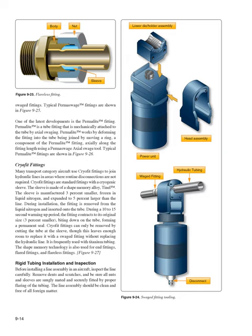Cryofit fittings: many transport category aircraft use cryofit fittings to join hydraulic lines in areas where routine disconnections are not required. Cryofit fittings are standard fittings with a cryogenic sleeve made of a shape memory alloy. The sleeve is manufactured 3% smaller, frozen in liquid nitrogen, and expanded to 5% larger than the line. During installation, the fitting is removed from the liquid nitrogen and inserted onto the tube. During a 10-15 second warming up period, the fitting contracts to its original size, 3% smaller, biting down on the tube and forming a permanent seal. Cryofit fittings can only be removed by cutting the tube at the sleeve. It is frequently used with titanium tubing. The shape memory technology is also used for end fittings, flared fittings, and flareless fittings.